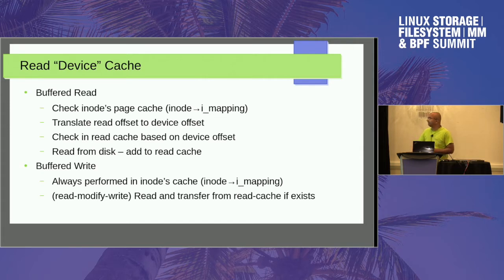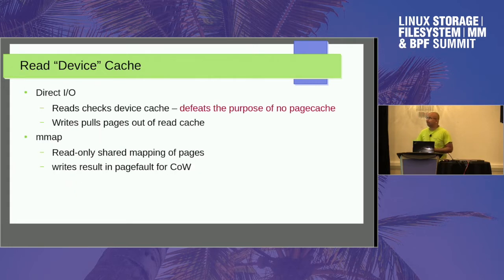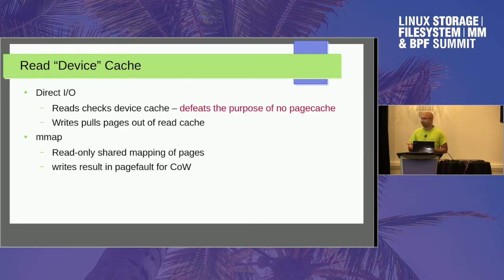In buffered write, the situation is a little different — it's always performed in the inode's i_mapping. If you're doing a partial write for a page, you have to read it from disk; you first check in the read cache before going to disk. The harder ones are direct IO. With respect to reads, it kind of defeats the purpose of direct IO, because direct IO means you don't have it in page cache, but we are having a disk cache for your inode pages.